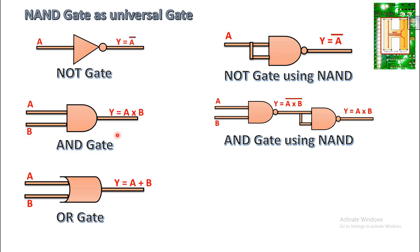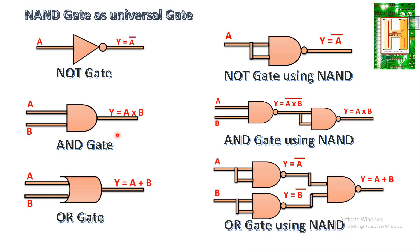Third, implementing OR using NAND. We use three NAND gates. The first NAND gate takes A as input, the second takes B as input, producing outputs A complement and B complement respectively. These are given to the third NAND gate, giving Y equal to the complement of A complement plus B complement, which by double complementation gives the original logic Y equal to A plus B. Hence NAND is a universal gate since we can implement AND, NOT, and OR using only NAND gates.